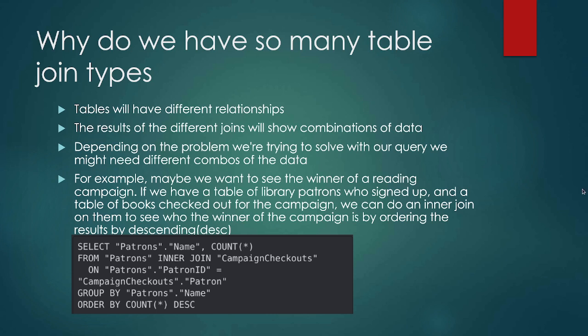The first thing we want to talk about is why we have so many table joins. All of the data in a database is organized into one or multiple tables, and these tables will have different relationships. The results of these different joins will show different combinations of data, and the type of join we pick is going to depend on the type of problem we want to solve. Queries are asking the database different questions, and the results we get depend on the relationship between the different tables.